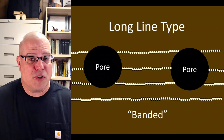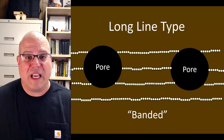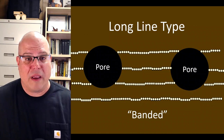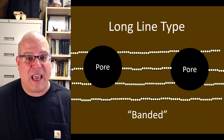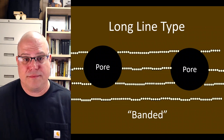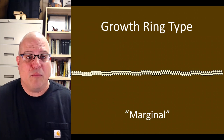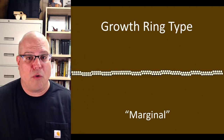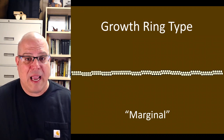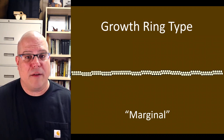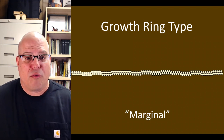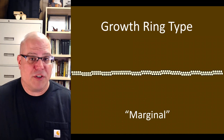Moving on from the short lines, we have long lines that occur with more or less regular spacing throughout the growth ring — we call these banded parenchyma. Banded parenchyma are easy to recognize and often form a net-like pattern when they intersect with the vertical rays. Finally, we have a parenchyma pattern that occurs only at the boundary between two growth rings, called marginal parenchyma. Some woods mark the growth ring boundary with a row of marginal parenchyma instead of an abrupt change in pore size.